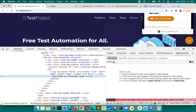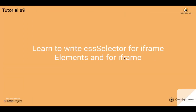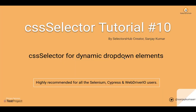There is no extra rule to write CSS selectors for iframes — the same formula we have learned so far will work. In the next tutorial, we will see how to write CSS selectors for dynamic dropdown elements.